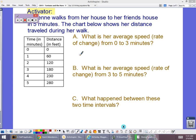So we had a warm-up, our activator. Adrienne walks from her house to her friend's house in five minutes. The chart below shows her distance traveled during her walk. So we want to think about this and say, okay, at zero minutes, she's traveled zero feet.